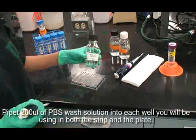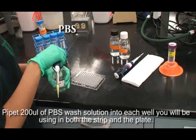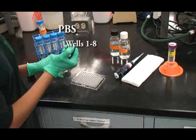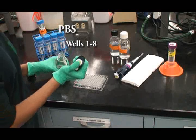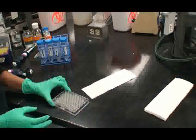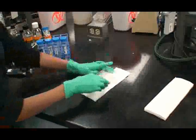Pipette 200 microliters of PBS wash solution into each well you will be using in both the strip and the full plate. Empty by tapping on a paper towel. Repeat two more times.